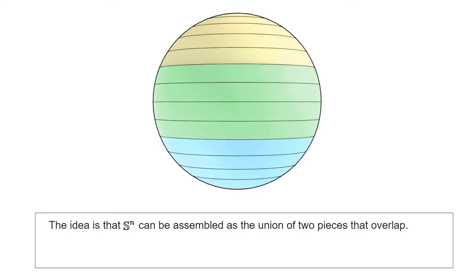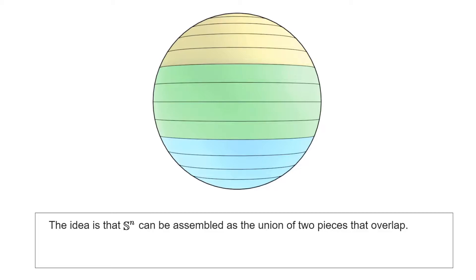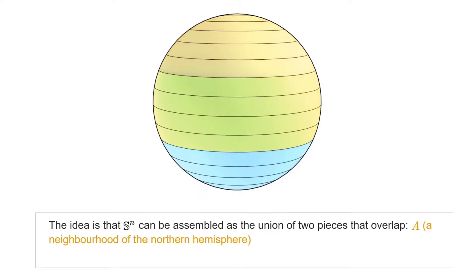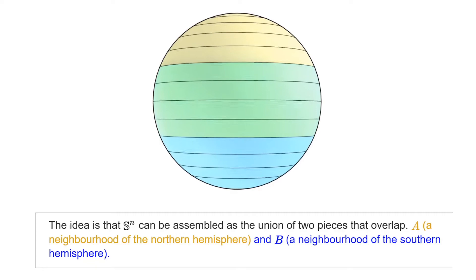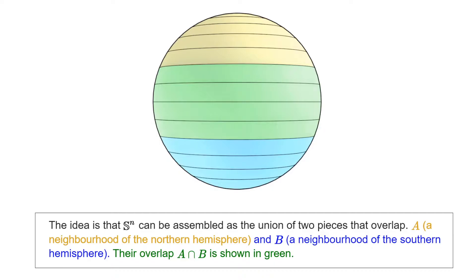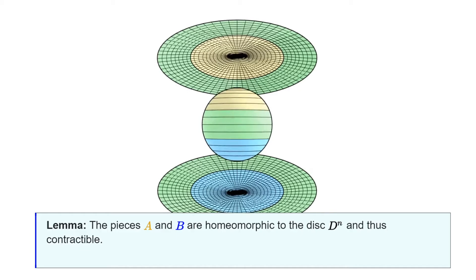In the animation, you can see that we've divided S2 into two pieces. The first one, which we call A, is a neighborhood of the Northern Hemisphere. The second piece, that we call B, is a neighborhood of the Southern Hemisphere, shown in blue. These two open pieces overlap in an equatorial band that we show in green. An observation that you are probably familiar with is that the pieces A and B are in fact homeomorphic to the open disk — that is, homeomorphic to Rn — and thus contractible.